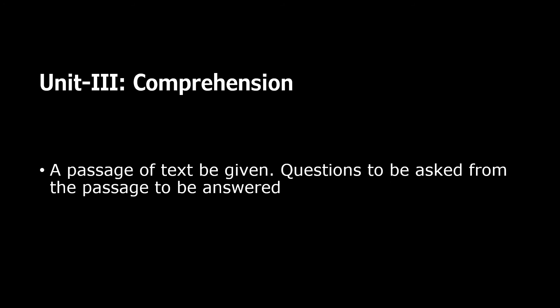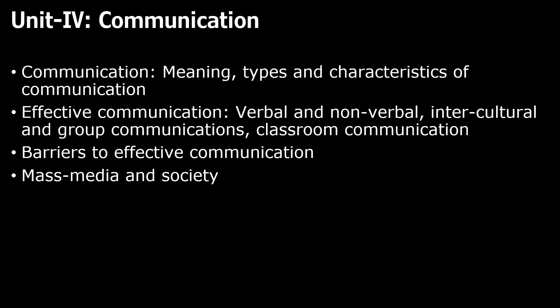Under section 3, you have comprehension. You will be given a passage, you have to go through it, and questions will be asked from the passage. You will be given four options and you have to pick the right answer. Then, you have communication, where you have to understand the meaning, types and characteristics of communication, effective communication — verbal and non-verbal, intercultural and group-based communication and classroom-based communication. You should also cover barriers to effective communication and the role of mass media and society.